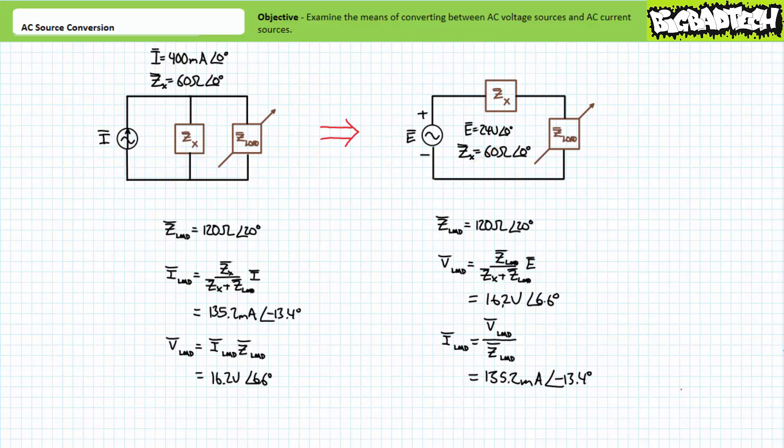Note: when performing source conversion in circuits with more than one source, it's important to maintain original polarity. Notice the voltage source positive terminal is pointing up, as is the current source's directional arrow. These indicators imply that at the start of the analysis the positive cycle initiates in the indicated direction. By respecting polarity and direction, this ensures that the variable load impedance experiences the same direction of current flow as a function of time for both configurations.